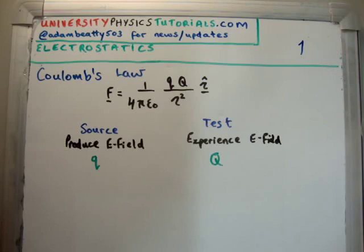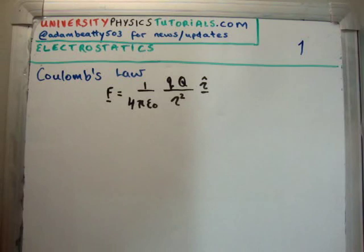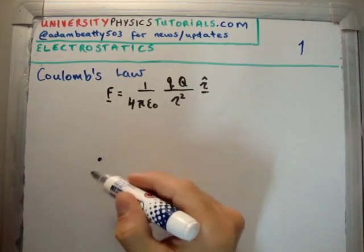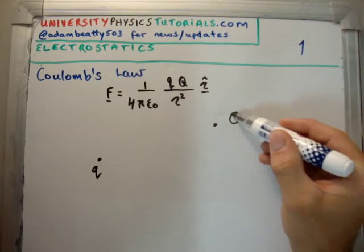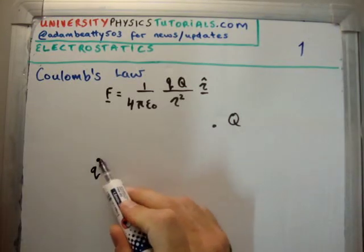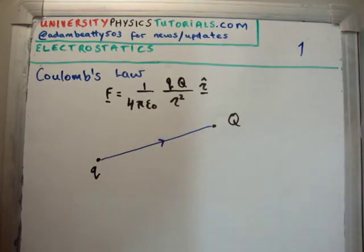The next thing we need to discuss is their separation. Let's say if I put a charge q, this is my source charge, and this here, large Q, is my test charge. So my source charge is producing what I'm after, seeing as the electric field, and my test charge large Q is experiencing it.